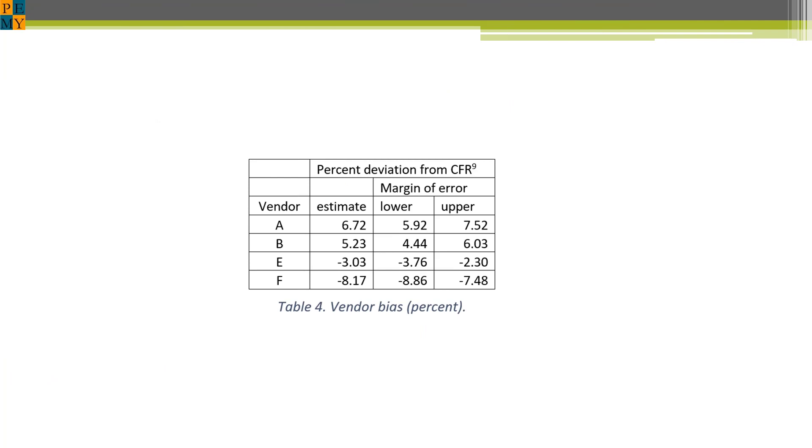This table shows the deviation of the four vendors from the consensus flow rate and is the basis of our claim that there are significant differences in accuracies of at least some of the vendors in the way that they do flow measurement.